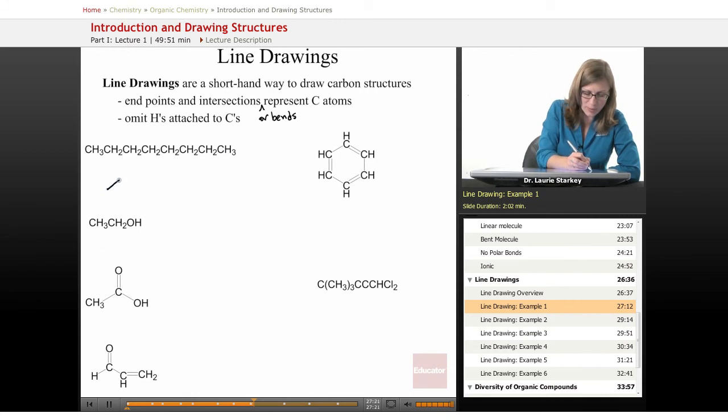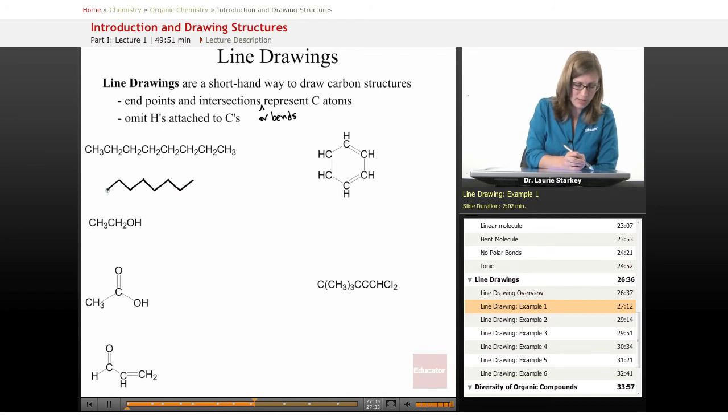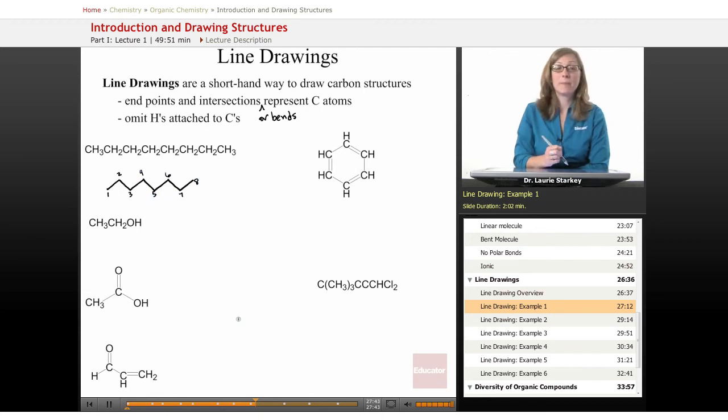So the way that this can be represented is we go 1, 2, 3, 4, 5, 6, 7, 8. This endpoint is a carbon and any bend here or intersection of these two lines, 2, 3, 4, 5, 6, 7, 8.